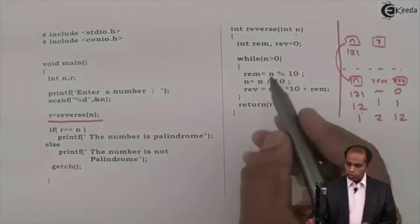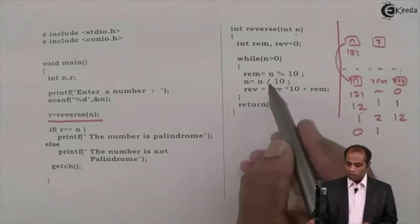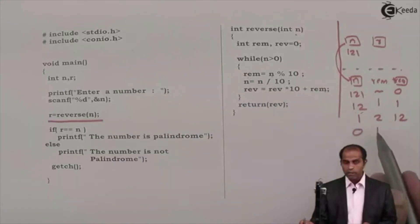Go back, 1 greater than 0. True. 1 mod 10 is 1. 1 by 10 is 0. Integer by integer is integer. Hence 1 by 10 never set as 0.1, it is 0.